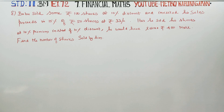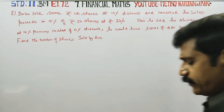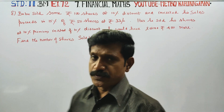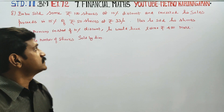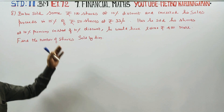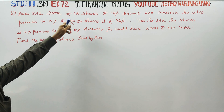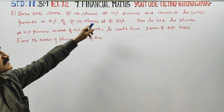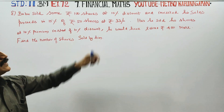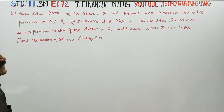Dear 11th Standard Business Max students, I am Metro Karanagaran. In exercise number 7.2, Bob sold some rupees 100 shares at 10% discount.